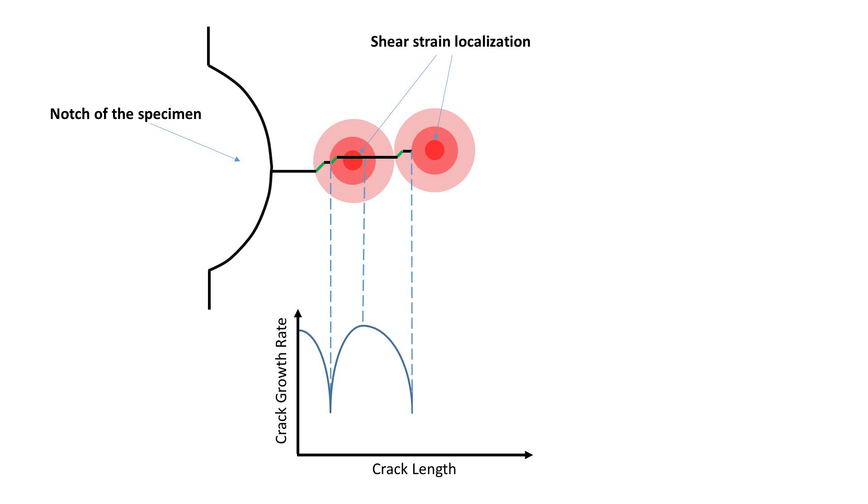When crack approaches the strain localization zone the crack growth rate decreases significantly due to change of the crack propagation mode. The crack growth rate increases continuously after the crack crosses the center of the strain localization zone. Crack growth rate starts to decrease again as soon as the next strain localization zone has formed ahead of the crack tip.